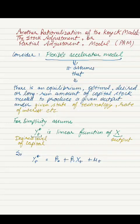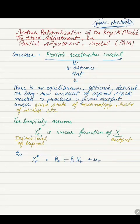Another rationalization of the COIAC model, called the adjustment or partial adjustment model, is given by Mark Nerlove. To explain this concept, let's consider the flexible accelerator model.